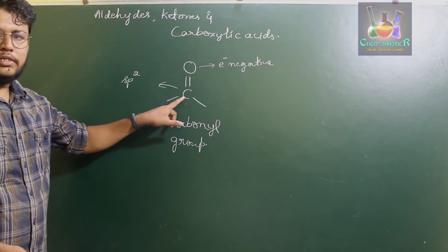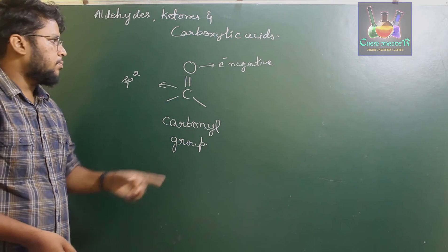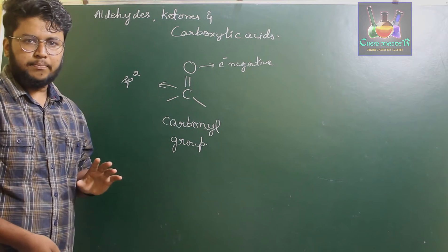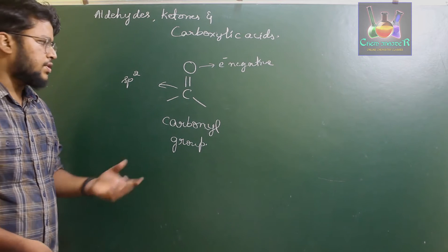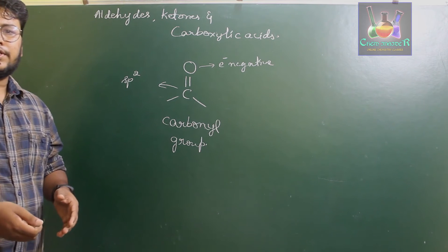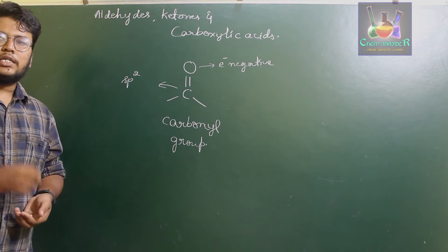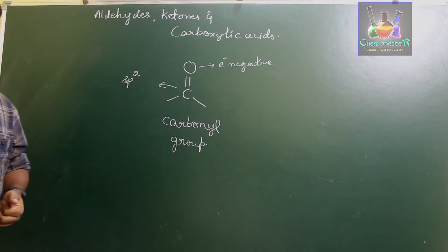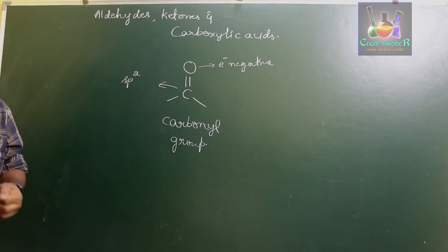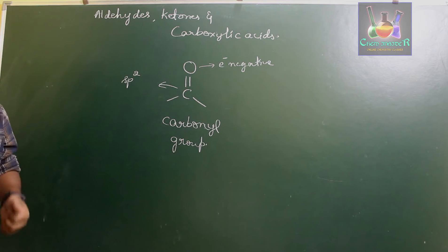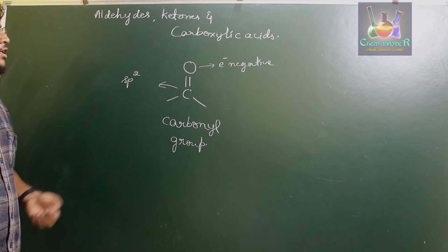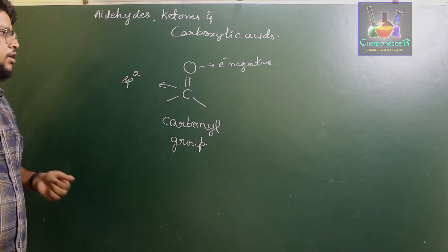The C=O group is called the carbonyl group; the oxygen is called the carbonyl oxygen and the carbon is called the carbonyl carbon. Depending upon the atoms attached to this carbon, we differentiate several different compounds. Aldehydes, ketones and carboxylic acids are very important in organic chemistry because they have a wide variety of roles in forming compounds, giving odor to compounds, and flavoring them.